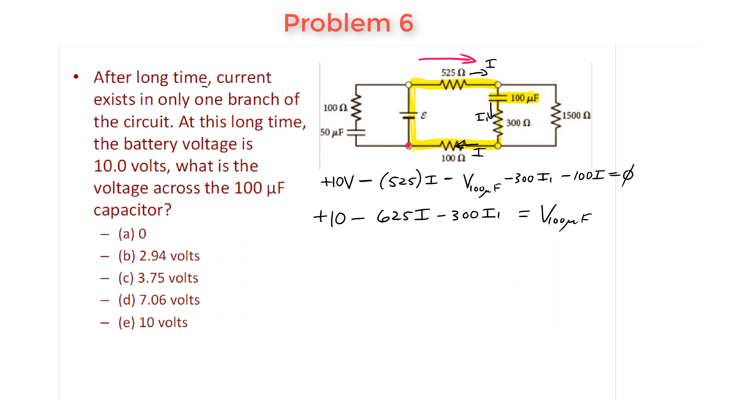Now remember what they say - they say after a long time. So remember what happens after a long time: the current I1 actually has to be equal to zero. We already talked about that one, so that simplifies this expression quite a bit. That means we don't have to worry about this term. There's no potential drop across that 300 ohm resistor because after a long time every branch in a circuit that contains a capacitor does not have any current flowing through it.